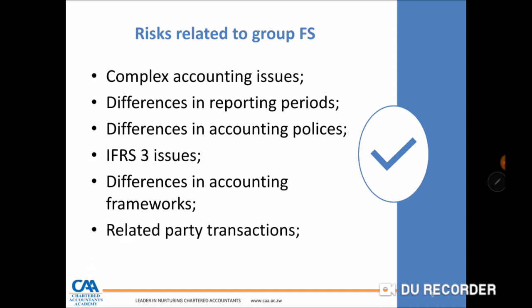Related party transactions may need to be eliminated or disclosed in accordance with IAS 24 — failure to comply with IFRS in this regard is a high risk area. The control environment is also a concern, as different subsidiaries or divisions within a group are likely to have differences in their control environment, increasing the control risk of the group financial statements.